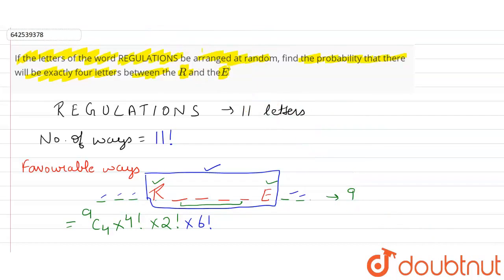So our probability equals the favorable outcomes, which is 9C4 times 4 factorial times 2 factorial times 6 factorial, divided by the total ways, 11 factorial. This is our answer.